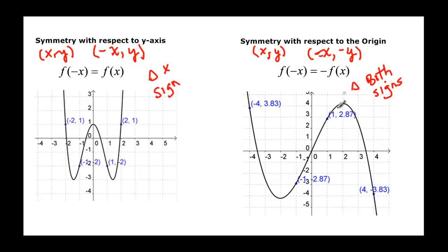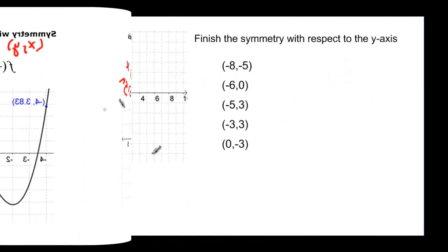And if you take your finger and put it on the origin here and spin your paper 180 degrees, you're going to end up seeing the exact same graph. That's how you could think about looking to see if something was really symmetrical with respect to the origin.